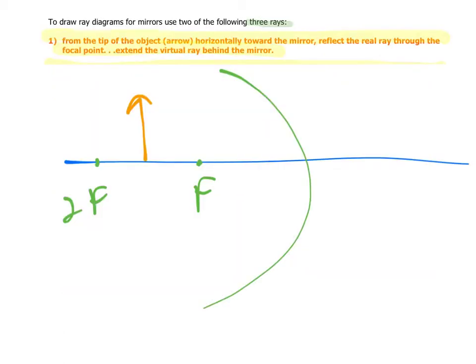Here's how to draw a ray diagram for a mirror. You could use two different points. One is from the tip of the arrow right here. You want to draw it horizontally towards the mirror then reflect it through the focal point like that. The second ray you could use is the exact opposite. You're going to start from the arrow. You go through the focal point first and then you reflect it horizontally.